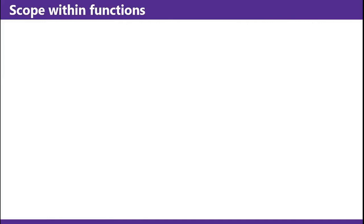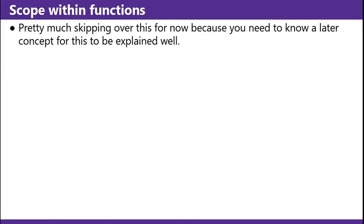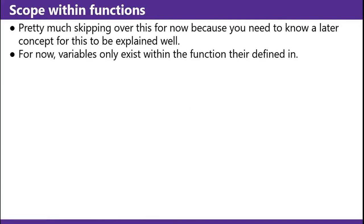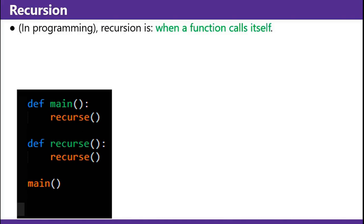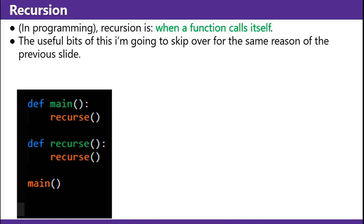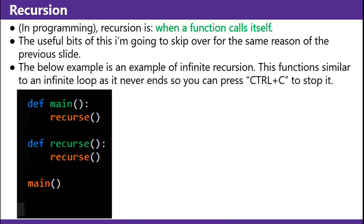Scope within functions: variables only exist within the function they're defined in. Recursion: in programming, recursion is when a function calls itself. The below example is an example of infinite recursion — this function is similar to an infinite loop as it never ends, so you can press Control C to stop it.